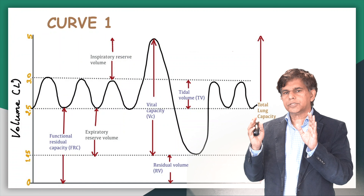So the FEV1/FVC ratio is 4.2 divided by 6, which equals 70%. Now in an obstructive lung disease like COPD, FEV1 decreases while FVC remains about the same or slightly decreases. So the ratio becomes 3 divided by 6, giving 50% — a clearly decreased ratio. That is the hallmark of obstructive disease.